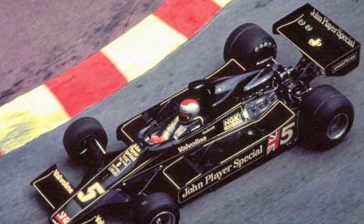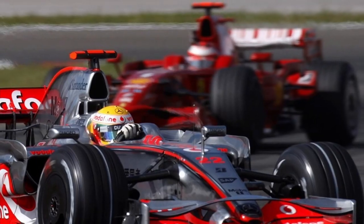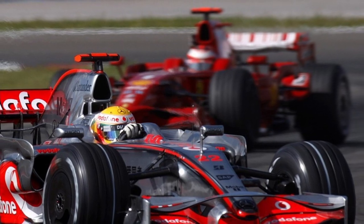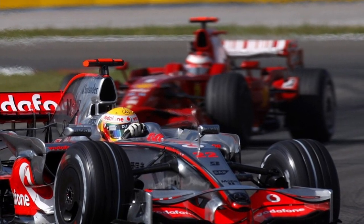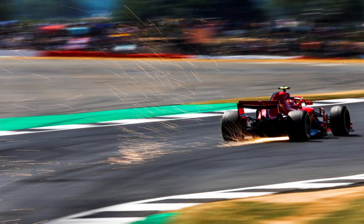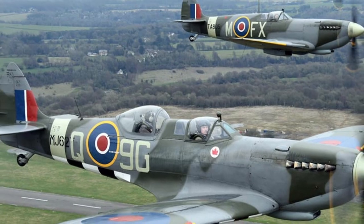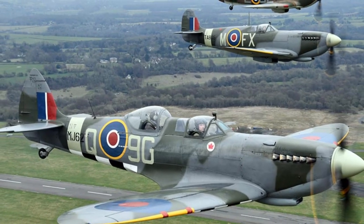Downforce — that word that every Formula 1 fan will have heard hundreds of times. It's fundamental to how an F1 car works, and the wings used to generate it are an iconic part of Formula 1 design. However, most people don't really know what it is. There's a big clue in the name: down and force — it's a force that pushes the car down. To find the origin of downforce we have to look to the sky, to planes.